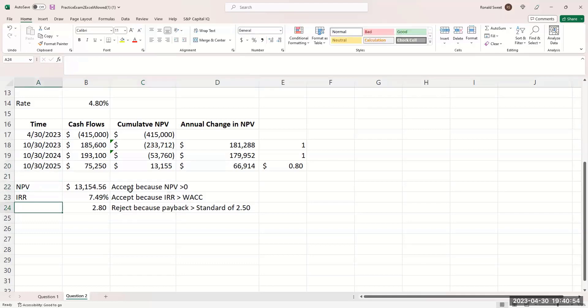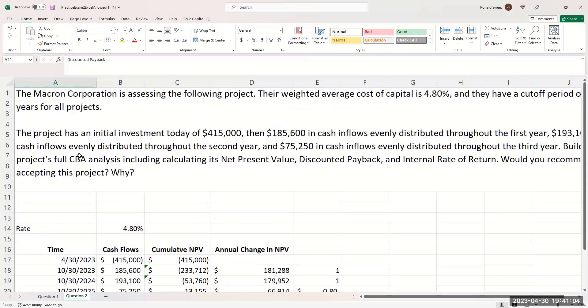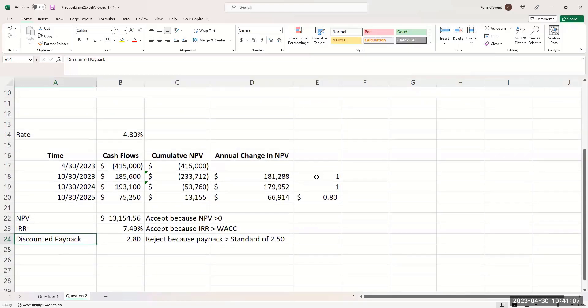Here I made it a little tricky. Their cutoff is 2.5. So here all I need for the why is accept because NPV is greater than zero, accept because IRR is greater than the WACC. Here reject because payback is greater than the standard of 2.50. That gives you full credit on the why part of the question. So if you do that, you would get full credit on this one. I think the payback is probably the hardest part of this.